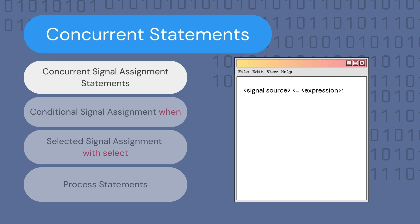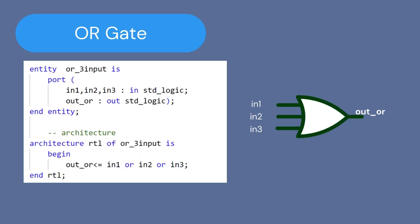Looking at the concurrent signal assignment statements, the signal target is assigned an expression, where the expression can be a constant, a signal, or a set of operators such as AND or OR gates that operate on other signals. As an example, let's examine how we would write an OR gate with three input ports. To design it, we first create the entity describing the ports — three inputs: in1, in2, and in3 — and one output representing the output of the OR gate.